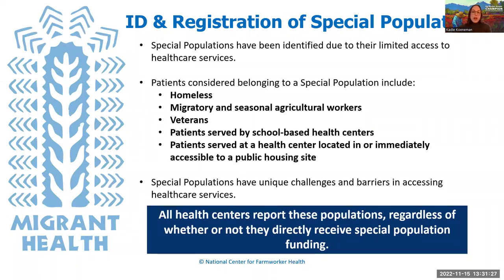There are several reasons why it's important to identify a patient as a member of a special population. The federal government has identified groups of community members that have limited access to health care services and unique challenges in accessing services, and therefore provides funding to support health services that specifically target these special populations. Special populations include homeless or unhoused individuals, migratory and seasonal agricultural workers, veterans, patients served by school-based health centers, and patients served at health centers located in or immediately accessible to public housing sites. All health centers report these populations regardless of whether or not they directly receive special population funding.